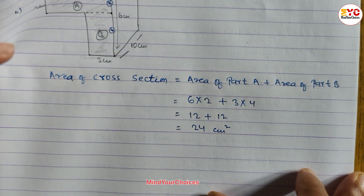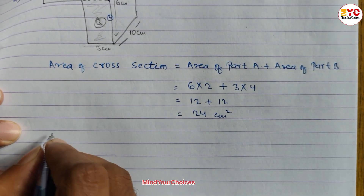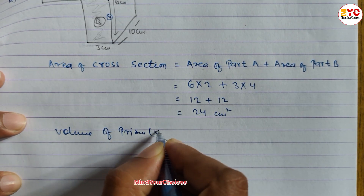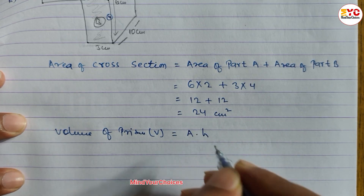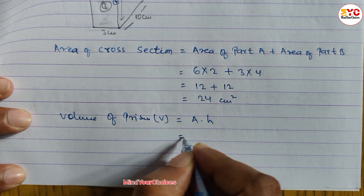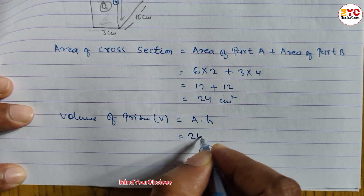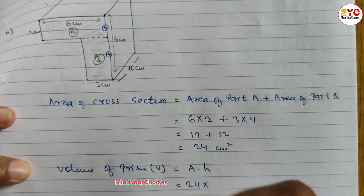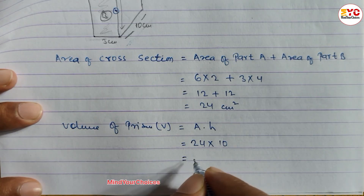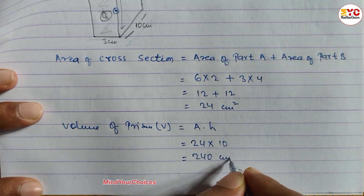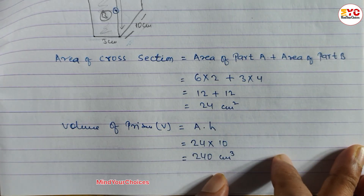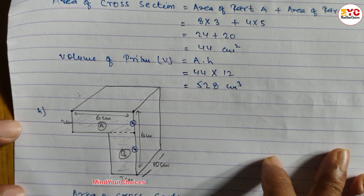So area of cross section is 24 cm². Now volume of prism: formula is area of cross section into height. Area of cross section is 24, height or length of prism is 10, so 24 into 10 gives 240 cm³. Hope you understand question number H.